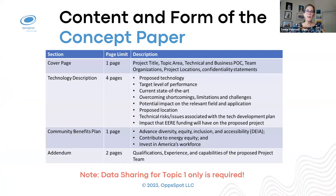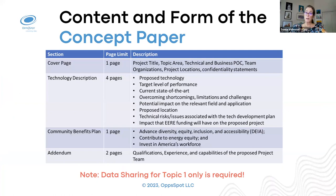Now let's get into the content of the concept paper. The first page is the cover page, then you can have up to four pages for technology description. You must include your community benefits plan addressing the three objectives in one page, and you can have an addendum of two pages to describe your team, experience, and other capabilities. Topic one also requires data sharing.